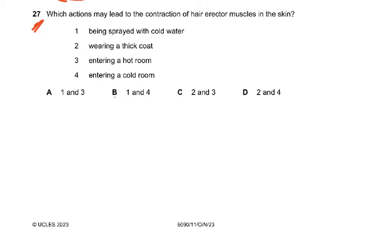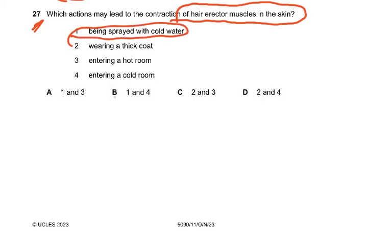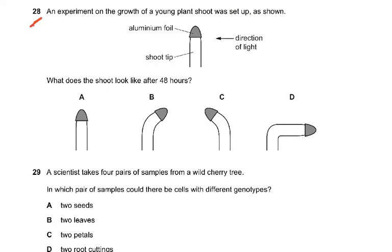Question 27: Which actions may lead to the contraction of hair erector muscles in the skin? It has to be something very cold — for example, being sprayed with cold water or entering a cold room. The answer is B — options one and four. Hair erector muscles respond when exposed to cold, such as falling into cold water, giving you goosebumps.